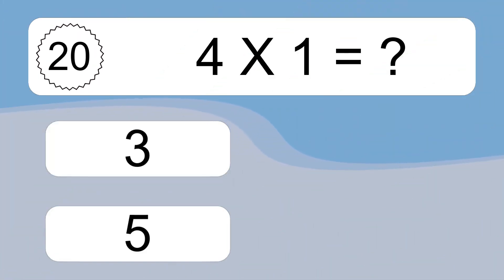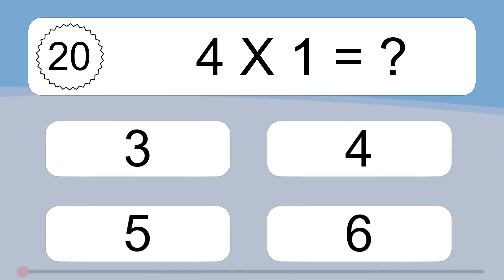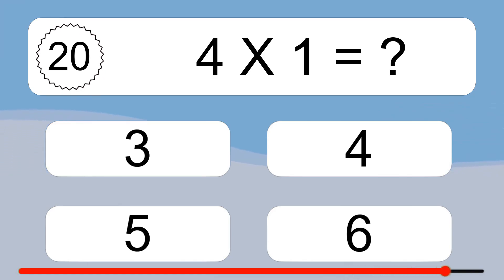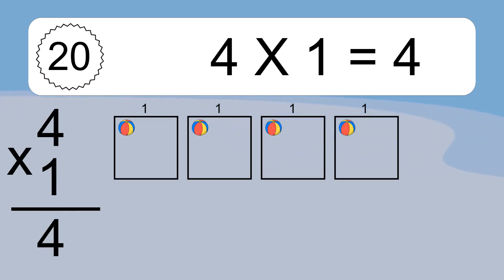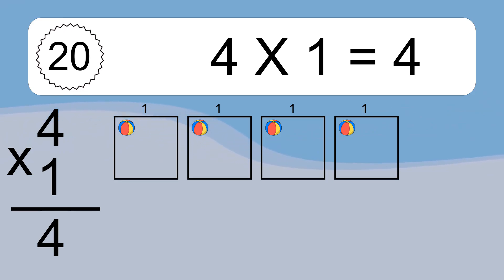Four times one equals what? Four times one equals four. We have four boxes, and each box has one colorful ball inside. If you count all the balls in all the boxes together, you will have four times one balls. This equals four balls.